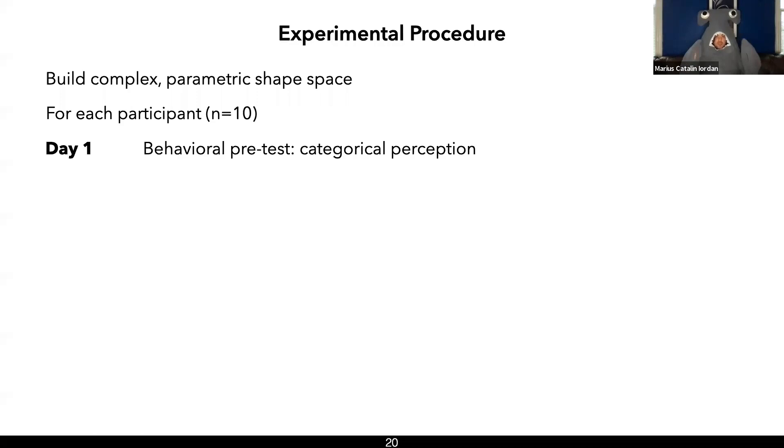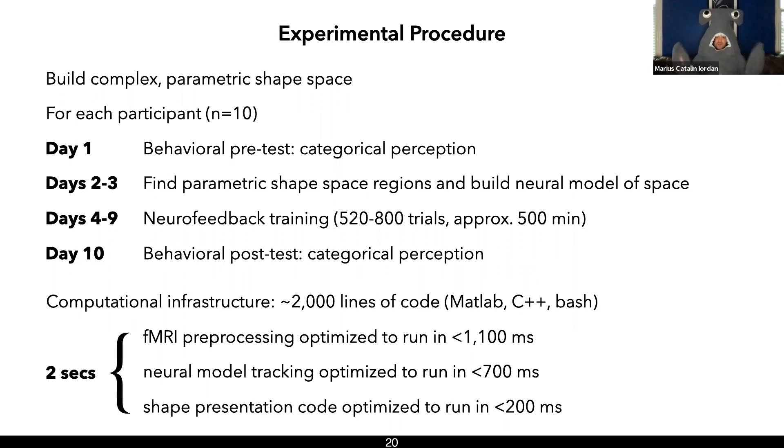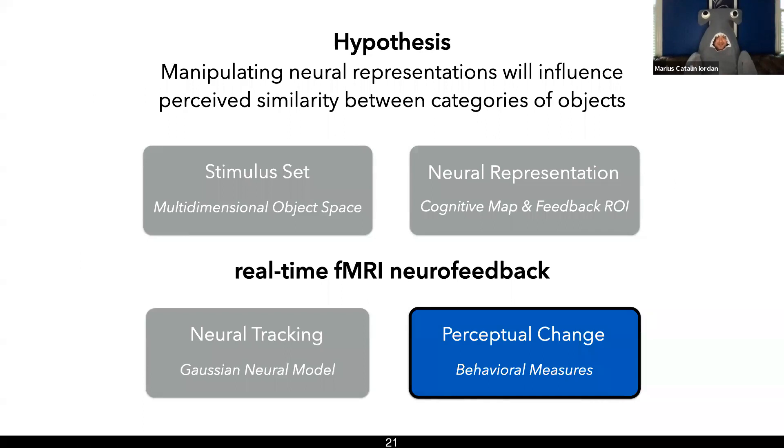To test this hypothesis that we can change neural representation and influence perception, we put everything together into a 10 day experiment. We built a complex space and made sure people perceive it in an unbiased way. We found all the brain regions in that person that represented the space parametrically. We built a model of the space and used it to track and modify representations across six days of neurofeedback training. And on the last day we tested what happened to perception of the shapes. To do this, we had to also develop an efficient computational infrastructure to handle all of this in two seconds. That was nine months of my life.